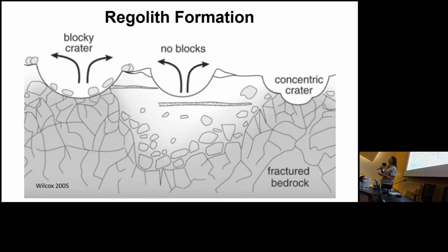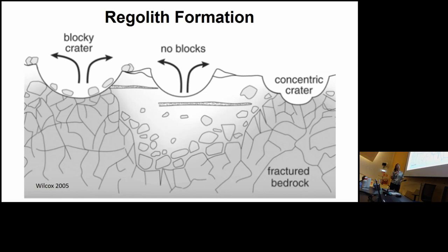The regolith depth is highly variable because of the variable nature of where impacts occur and how large they are. For instance, here in the middle you can see an area that doesn't have much bedrock, whereas over here the bedrock comes up much closer to the surface. That's one important point to keep in mind toward the end of my presentation.